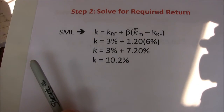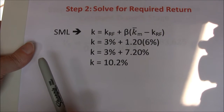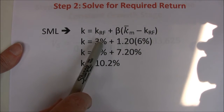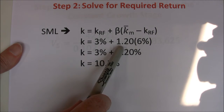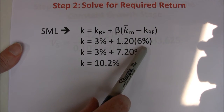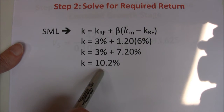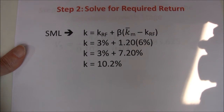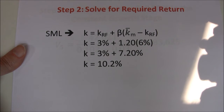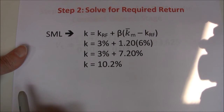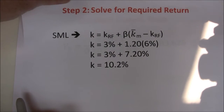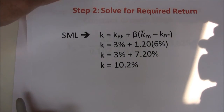Once we have the cash flows we need the required return. Using the security market line: risk-free rate of 3%, beta of 1.2, and a risk premium of 6% gives us a required return of 10.2%. So based on this model, investors should be wanting a 10.2% rate of return on Apple stock, and that's what we'll use to discount the cash flows.